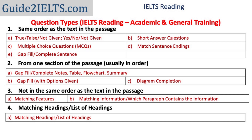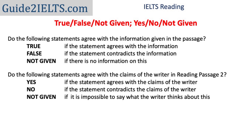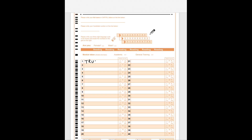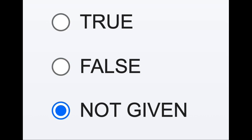Let's start. We're discussing two question types together: True, False, Not Given and Yes, No, Not Given. This is what your question looks like in the test, followed by a number of statements. For each statement, you have to figure out whether the statement is true, false, or not given — or yes, no, or not given. In pen and paper IELTS, you write the correct answer in your answer sheet. In computer delivered IELTS, you choose the correct answer.